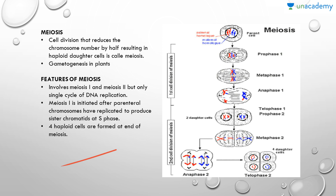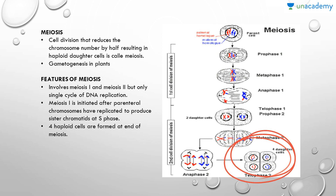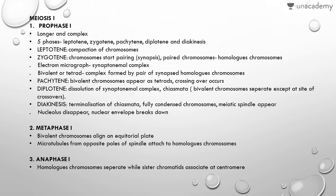DNA replication takes place in meiosis I, and meiosis I is initiated after chromosomes have replicated to produce sister chromatids at S phase. Four haploid cells are formed at the end of meiosis.